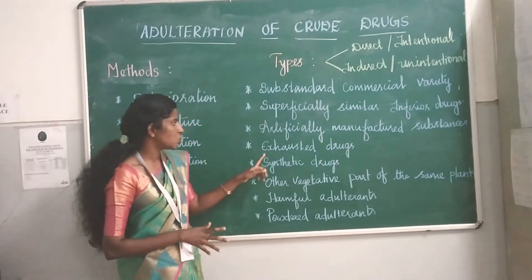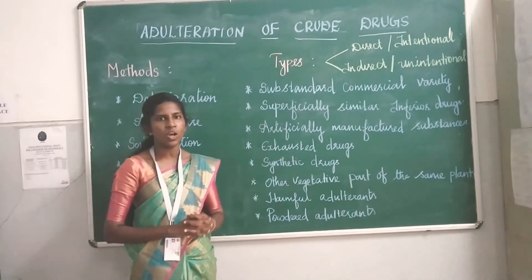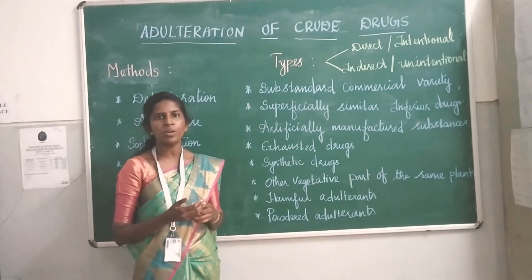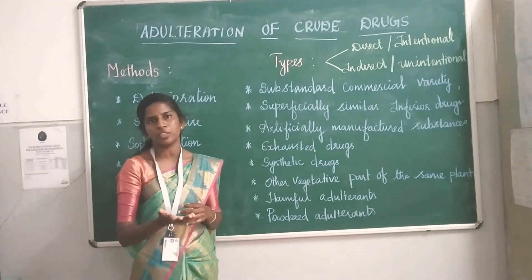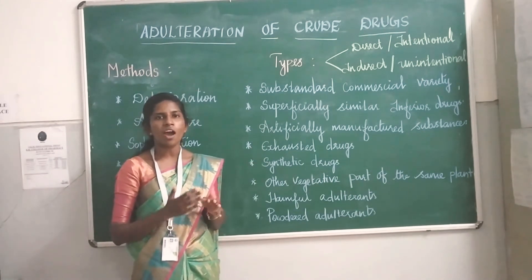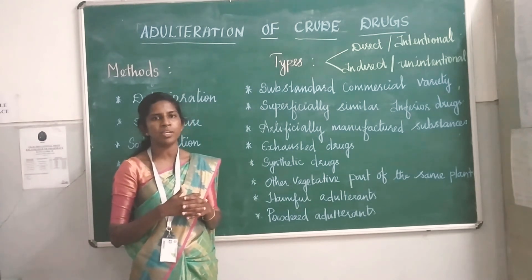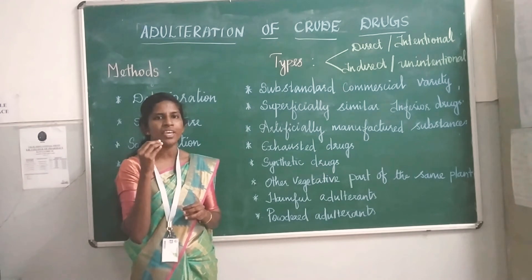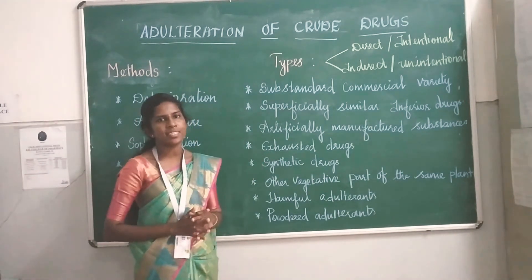The next type is substitution with exhausted drugs. This is mainly seen with volatile oil-containing drugs such as coriander and fennel, which have aromatic odor due to their volatile oil content. The volatile oil can be easily removed by distillation. After removing the volatile oil, the waste material — the exhausted drug — is mixed with the original drug. This is substitution with exhausted drugs.